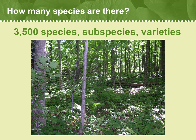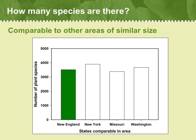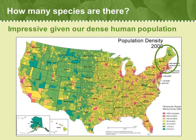Some parts of New England are richer in species than others, such as this moist sugar maple forest in western Massachusetts. If you look hard at this photo, you might be able to notice as many as 10 plant species just in this small area. New England's plant diversity is similar to other areas of the U.S. of comparable size and latitude, like New York State, Missouri, and Washington State. This is pretty impressive, considering how densely settled and urbanized New England is, especially Massachusetts, Connecticut, and Rhode Island.